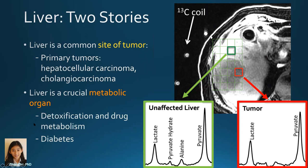The liver is also a crucial metabolic organ. The two main things it does: one is metabolism of anything ingested — particularly drugs and toxins. The other is glucose homeostasis. In conditions like diabetes, the liver plays a central role in gluconeogenesis, basically the storage and release of glucose back into the bloodstream. Those are things that we're going to be able to see with C13. This is an example of a C13 acquisition in a patient, where we put our surface coil and look at spectra.